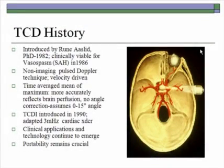Transcranial Doppler was introduced by Rune Aaslid in 1982 and clinically viable in 1986. It was first utilized for the evaluation of vasospasm following subarachnoid hemorrhage, and it is a non-imaging pulsed Doppler technique that is velocity driven. The velocities evaluated are the time average mean of the maximum, because Dr. Aaslid felt this more accurately reflected brain perfusion. There was no angle correction required, and an angle of insonation of 0 to 15 degrees is assumed.